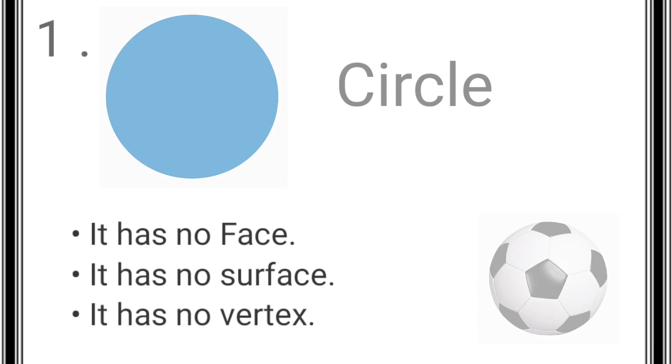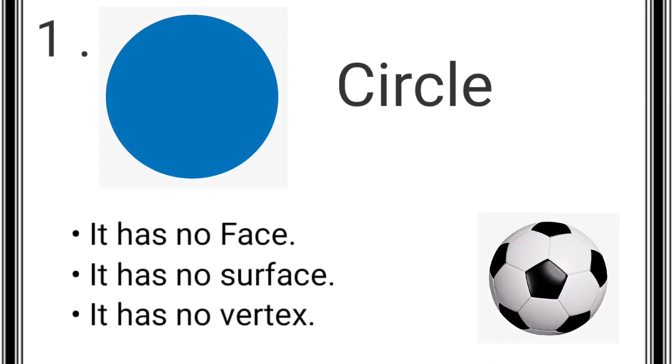The first shape is circle. A circle has no face, no surface, no vertex. Example: ball.